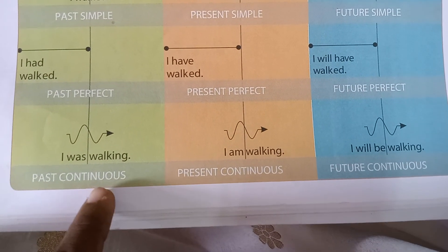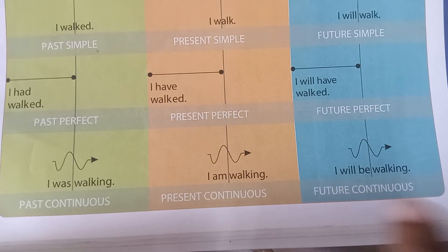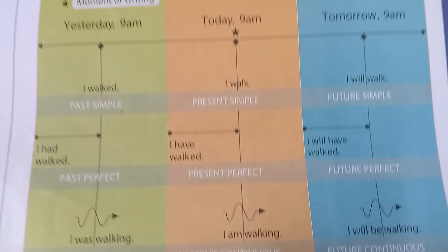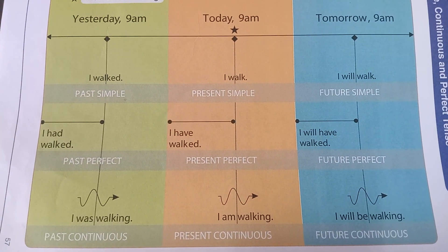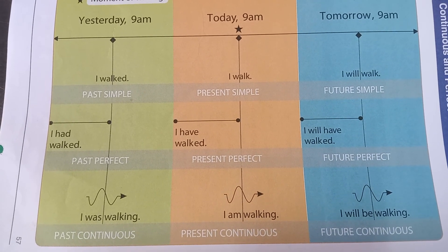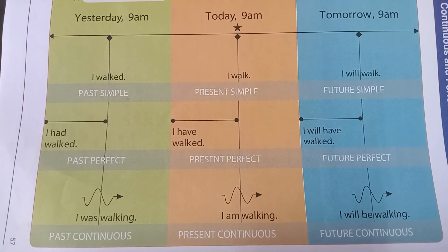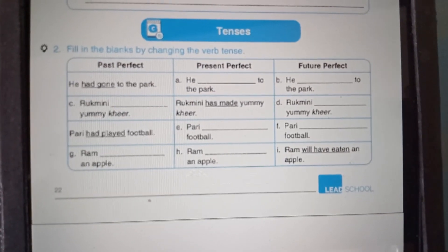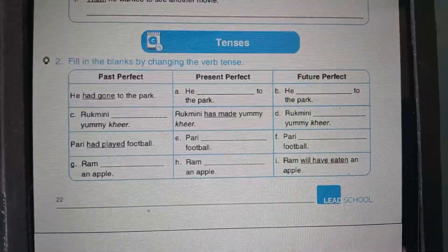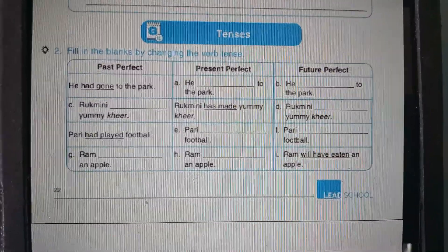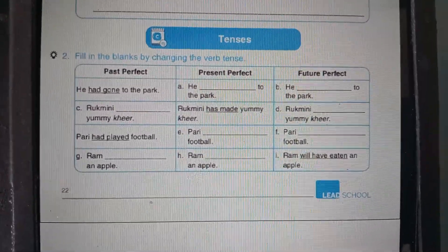Next — past continuous: I was walking. Present continuous: I am walking. Future continuous: I will be walking. My dear kids, do you understand from this grammar session? After completing the class, write five example sentences for each tense in your notebook. You also have to do worksheet number 17, question number 2 — fill in the blanks by changing the verb tenses. This is also your homework. Go through the SR book and then complete worksheet number 17, question number 2.